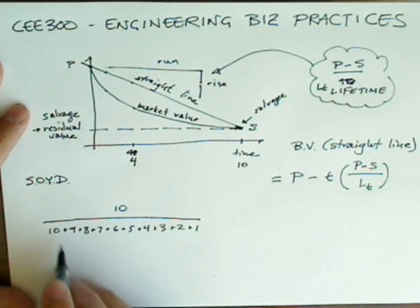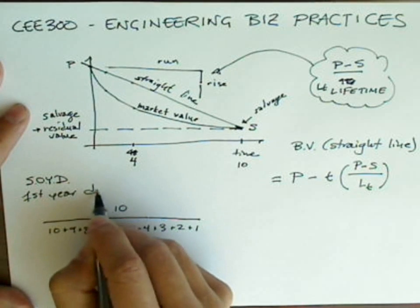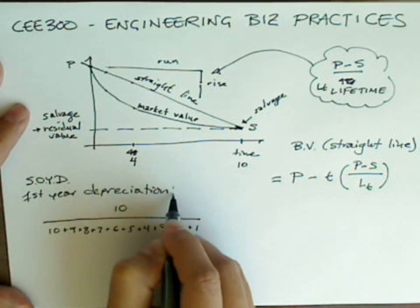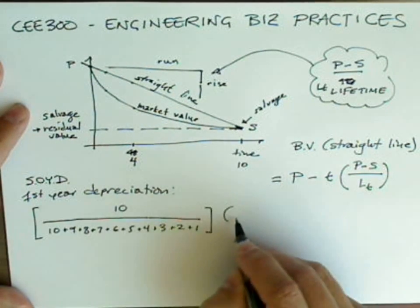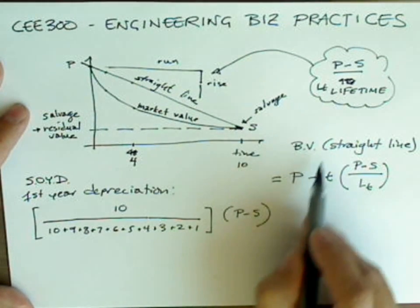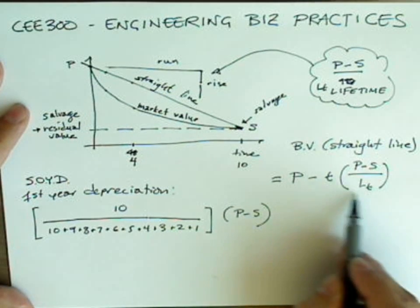In sum of the year's digits, first year depreciation is given by this fraction multiplied by P minus S. So you can see, when we compute the book value, we start with the initial value, we take the years, and then we have this fraction.